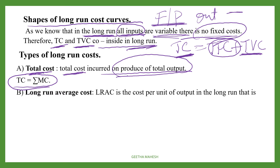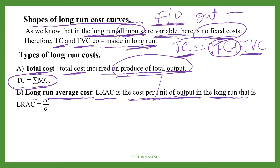The second type is long run average cost (LRAC). It is the cost per unit of output in the long run. It can be calculated using the formula: long run average cost equals total cost divided by quantity.